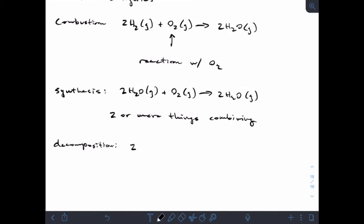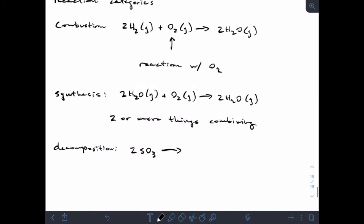Synthesis is two or more things combining. We have decomposition. An example would be sulfur trioxide breaking down into sulfur dioxide and oxygen gas, something breaking up. Notice that I call that sulfur trioxide and not sulfate or sulfite. The name sulfite pertains to an ion; this is a neutral molecule. Same thing with SO2, sulfur dioxide. Be careful not to confuse your neutral molecules with your polyatomics.